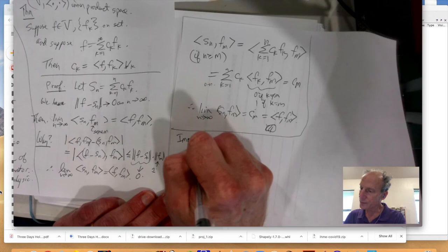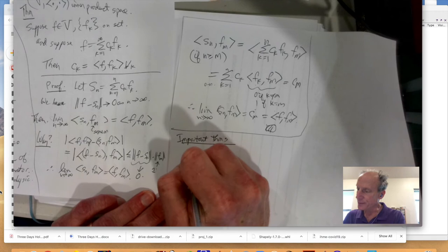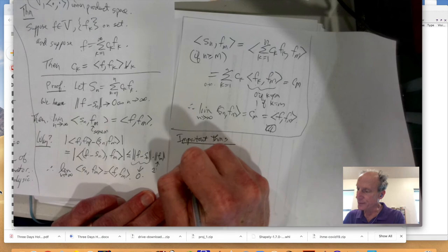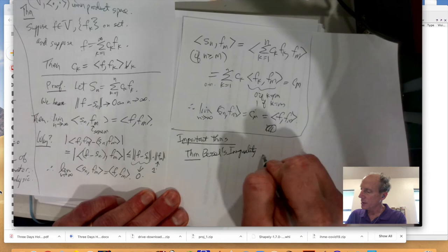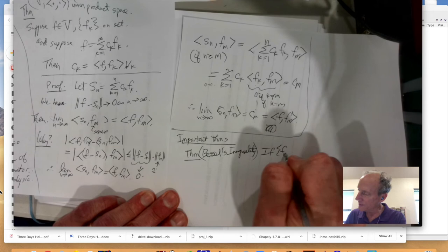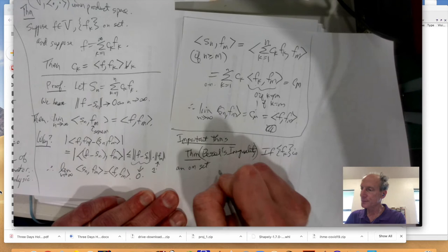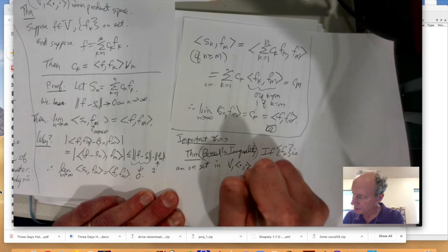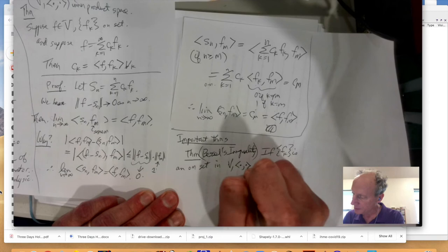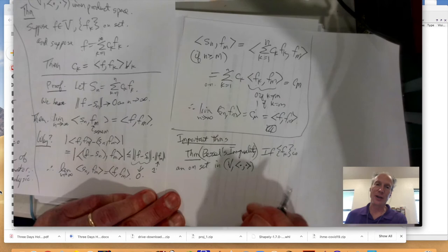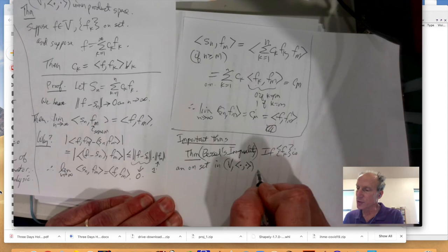All right. So, now there's some important theorems. One is Bessel's inequality. Okay. If, you know, again, FK is an orthonormal set in the... We're going to do this for general inner product spaces. And that way, we can apply it to many different situations, one of which will be L2 of an interval. So, that would be great.